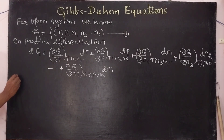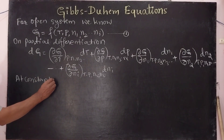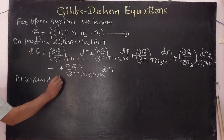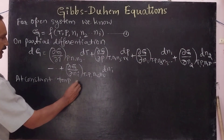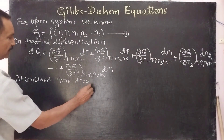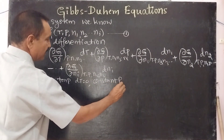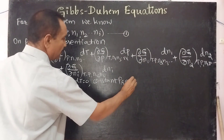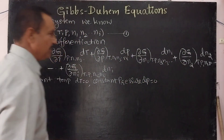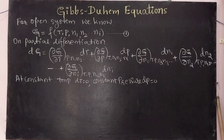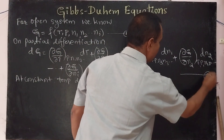At constant temperature and pressure, dT is equal to 0 and dP is equal to 0. So those terms vanish. Let us number this resulting equation as equation 2.